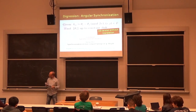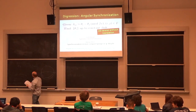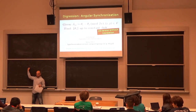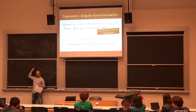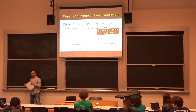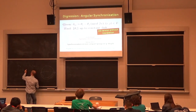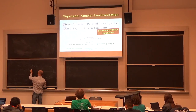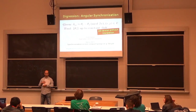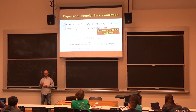The problem is that the measurements δ_ij may not be consistent. For instance, you'd expect δ_ij + δ_jk + δ_ki = 0, but due to noise you don't get that. If they were all consistent you could extract the information, but because they're not you have to do something to deal with the noise.